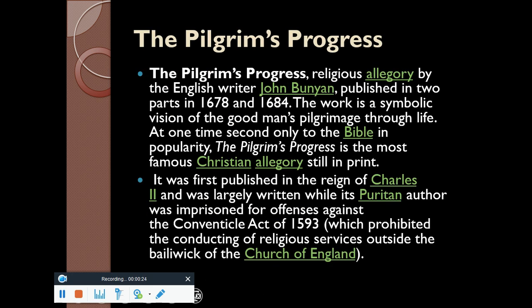Pilgrim's Progress is a religious allegory written by the English writer John Bunyan, published in two parts — the first part was published in 1678 and the second in 1684. The work is a symbolic vision of the good man's pilgrimage through life.